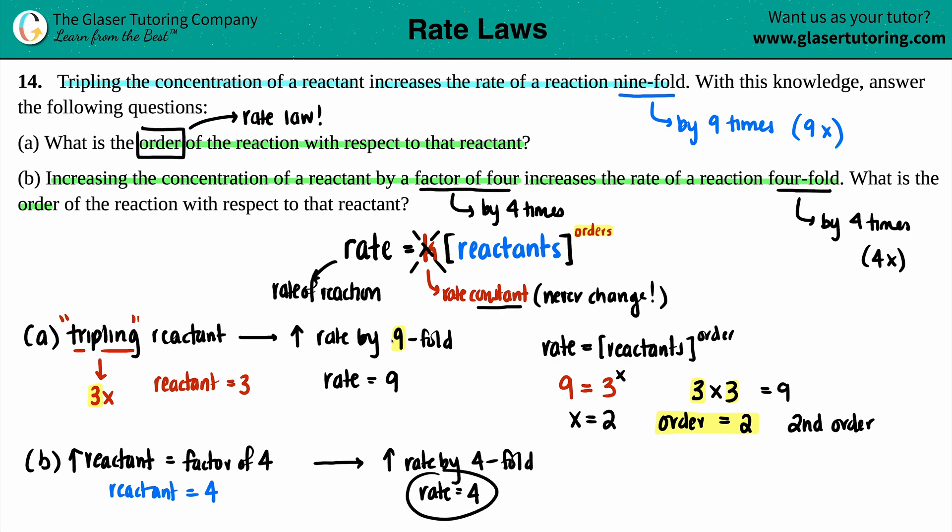We have the rate value, we have the reactant number. No one cares about the rate constant for these, and we're just going to solve for the order. So 4 equals 4 raised to the X. Four to the what will get me four? X equals one. We can say that the order for this reactant is a 1, and we call that first order.